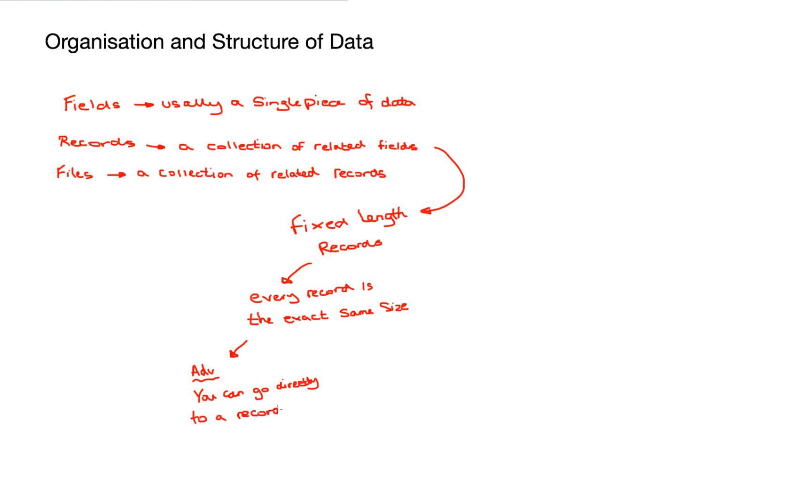We know the start and end of every record because they're all the same size. We can also calculate how many records fit in one file. The disadvantage to this is that we actually waste space if we don't quite fill the record. We have to pad it out to the exact size because everything has to be the same.